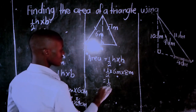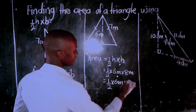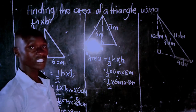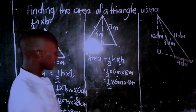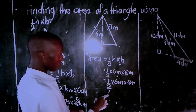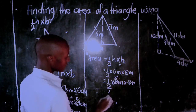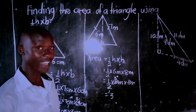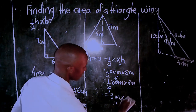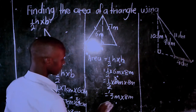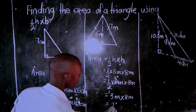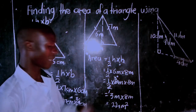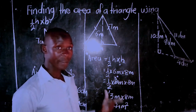The second step is to cancel out. I have a half times 6 meters times 8 meters. Both 6 and 8 can be divided by 2, so I choose 6: 2 divided by 2 is 1, and 6 divided by 2 is 3. That gives me 3 meters times 8 meters. Don't forget the units — if you skip the units, your answer is wrong. What is 3 times 8? It is 24. So the area is 24 meters squared. Areas are measured in square units.